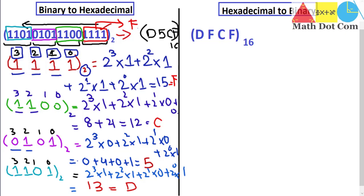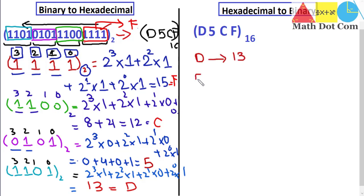Now we will see how you can convert a hexadecimal to binary number. I have taken the same example D5CF to verify our answer. First we convert the hexadecimal digits to their decimal equivalents: D is 13, 5 is 5, C is 12, and F is 15.